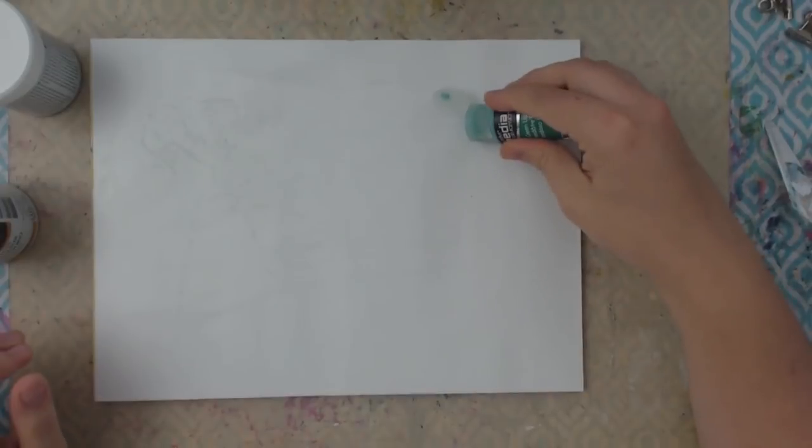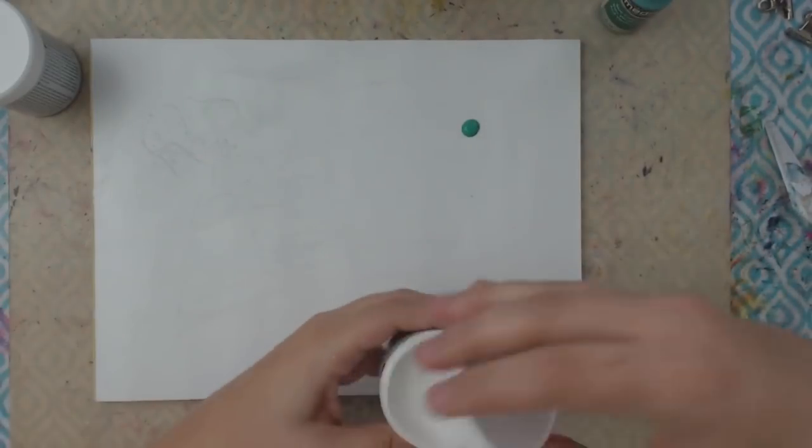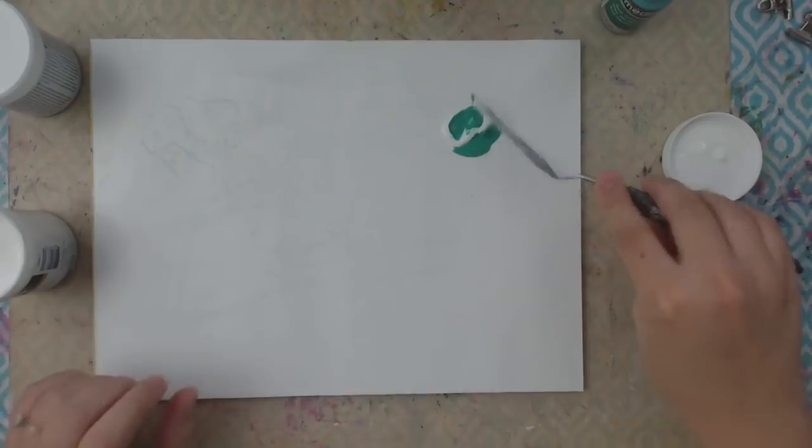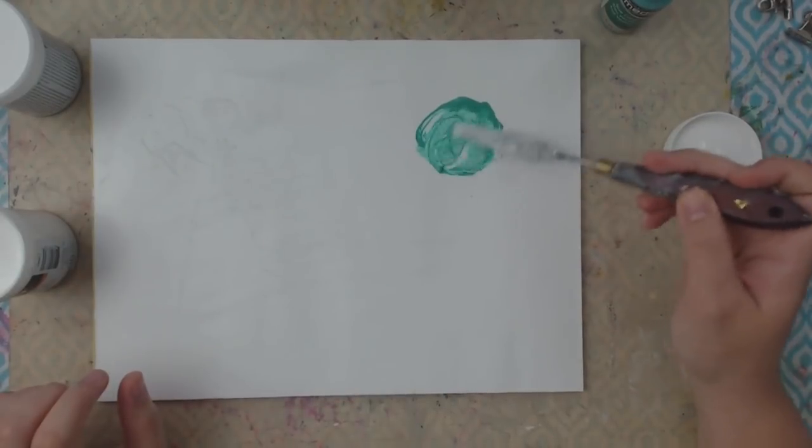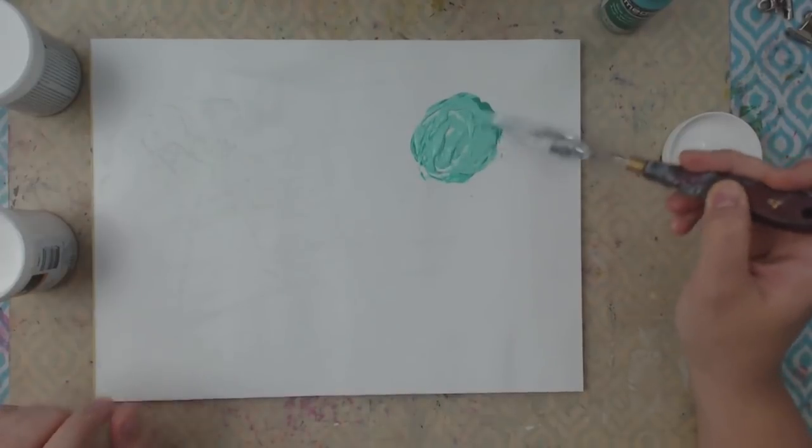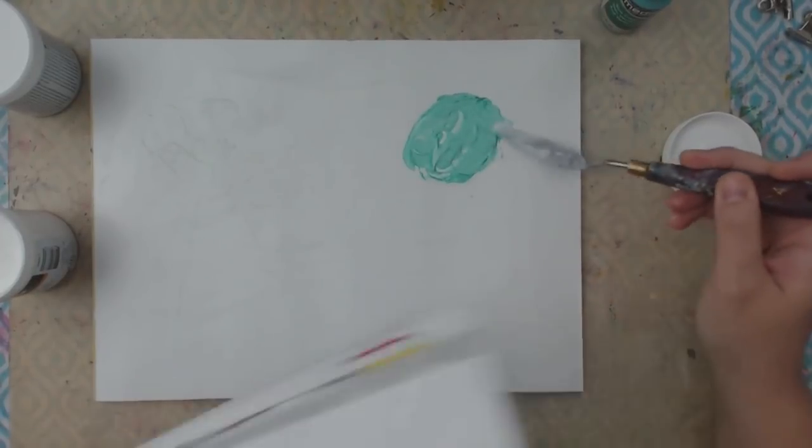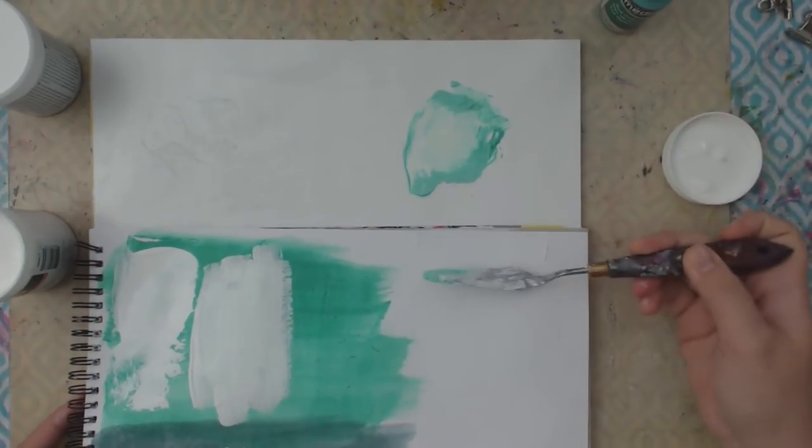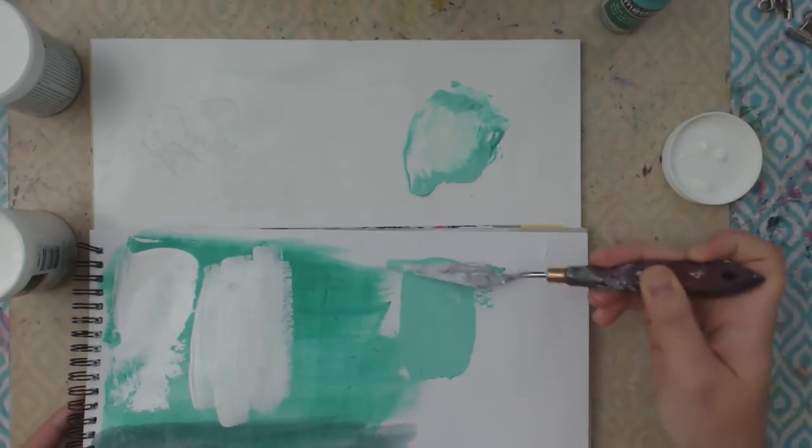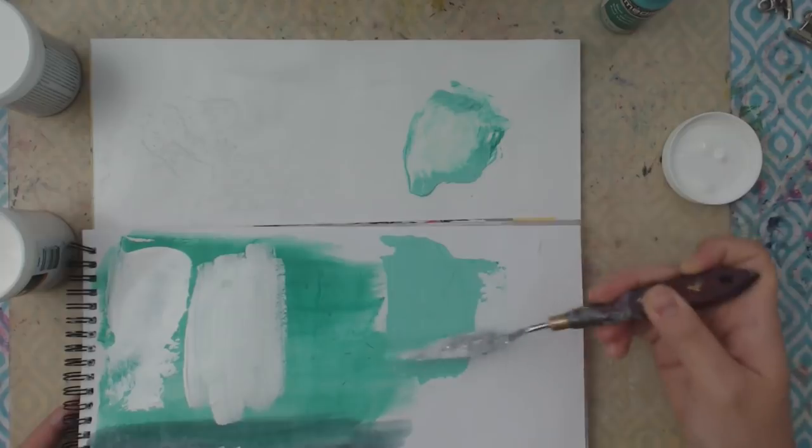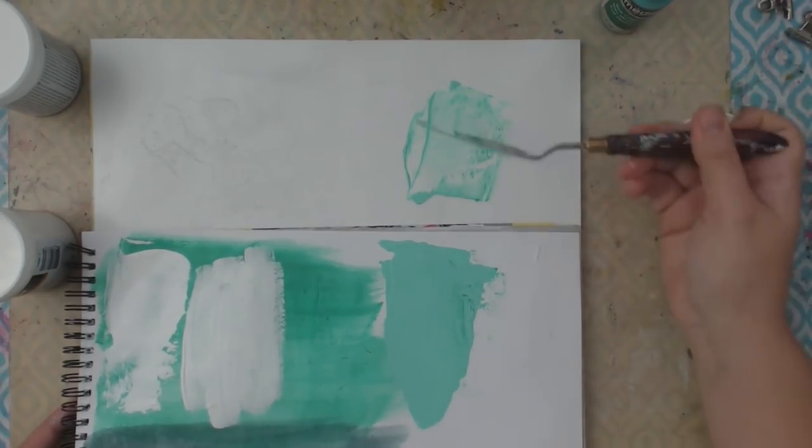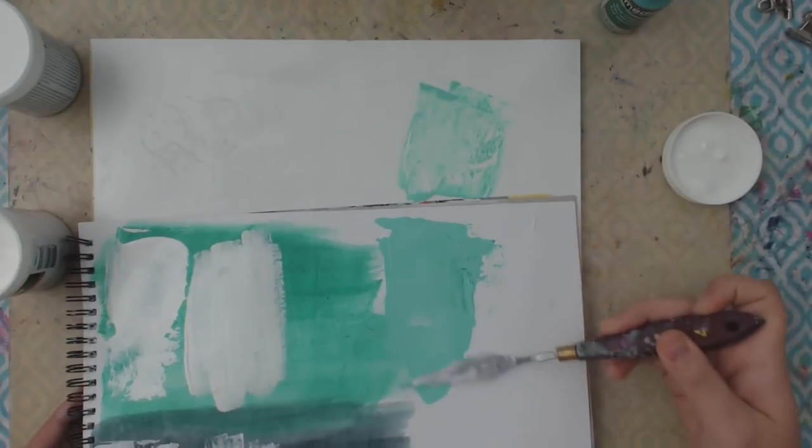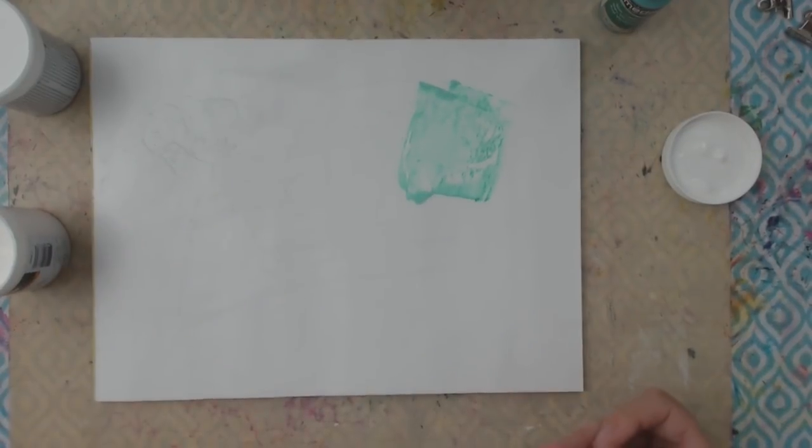So now we are going to mix the mediums with the fluid acrylic paint. So I'm just using the same colors and I'm gonna start with the Crackle Paste and just mix it a little bit. Now it says it's tintable up to 20% so it doesn't get that full true color so it does look a little lighter. And again you're supposed to do it in a kind of thick layer to get the best Crackle effect. So we're just gonna do that with both colors and see what happens.